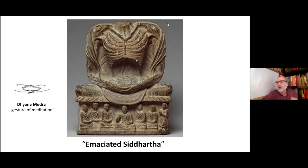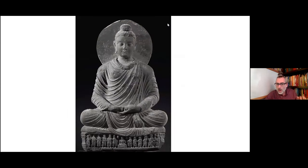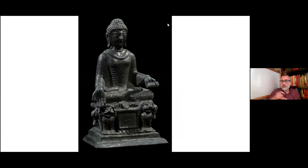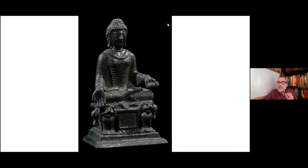This is part of a series of Buddha images, with the base showing other parts of the story. We also see the seated Buddha in full lotus — padmasana — with the dhyana mudra in the lap, seated on a lion throne, both feet visible. And for the first time in Gandhara, we see the right hand on the knee with the gesture of giving — the varada mudra — while the left hand holds something being offered.